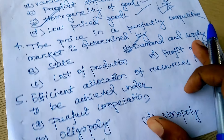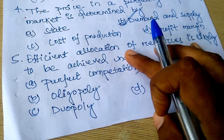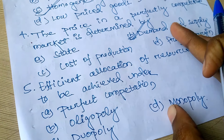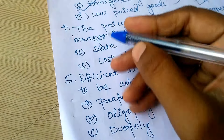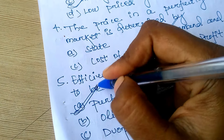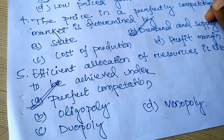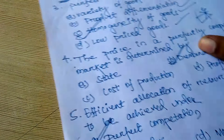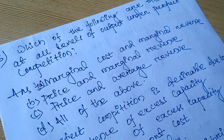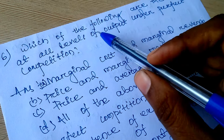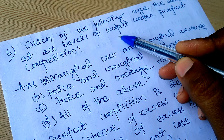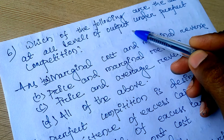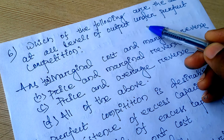Question five: Efficient allocation of resources is likely to be achieved under perfect competition, oligopoly, monopoly, or duopoly. You have to know that as it is an ideal market, efficient allocation of resources is likely to be achieved under perfect competition only.